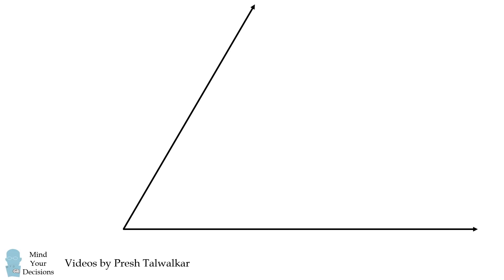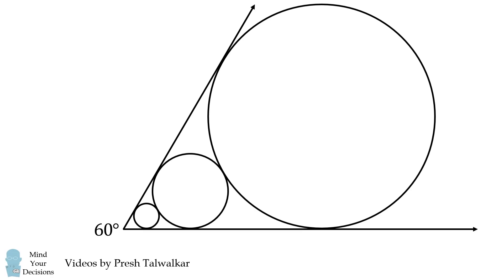The angle between two rays is equal to 60 degrees. We will now construct three circles. The first circle is tangent to the two rays. The second circle is also tangent to the two rays and tangent to the first circle. The third circle is tangent to the two rays and tangent to the second circle. If the radius of the first circle is equal to 1, what is the radius of the third circle equal to?